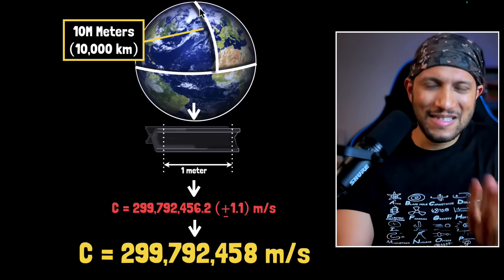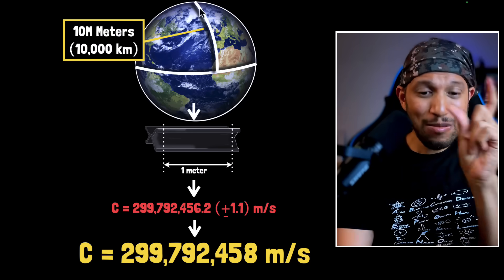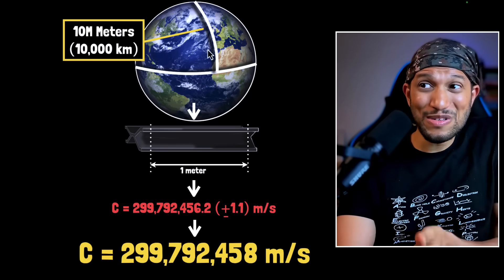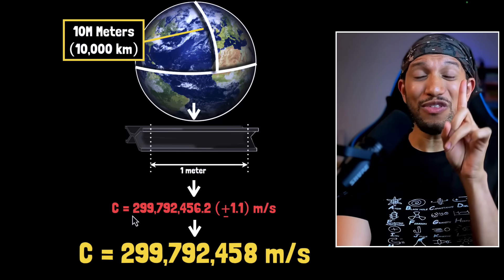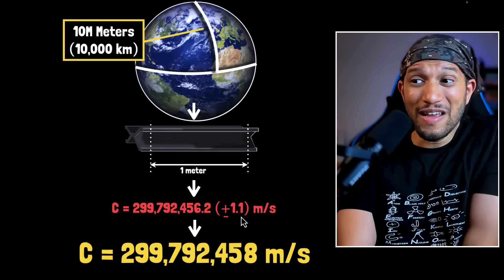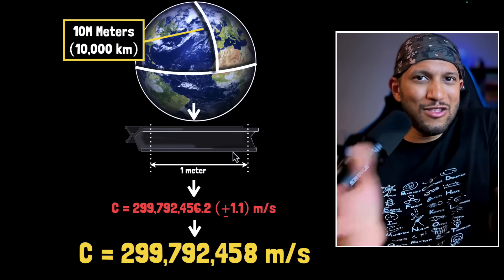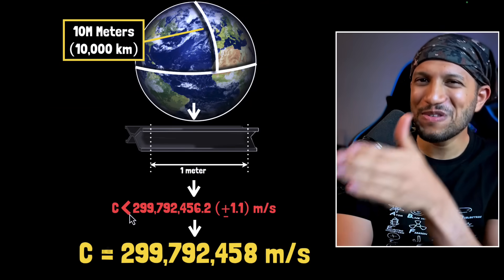But if the earth was slightly bigger, then we would have still called this 10 million meters. Then the size of our meter would have been slightly bigger, right? Because the earth is bigger, this distance is bigger. If the size of the meter would have been slightly bigger, then the speed of light that we would have eventually calculated would have been slightly smaller in meters per second, right? Because the length of the meter is more than the speed of light. I mean, the physical distance that light travels in one second would be the same. But if their meter size is big, then that distance traveled in terms of that meter, that would have been smaller.